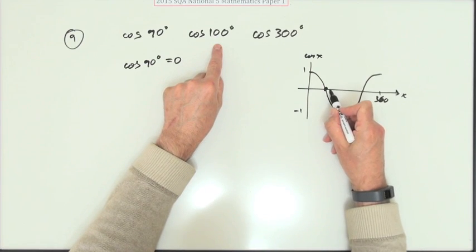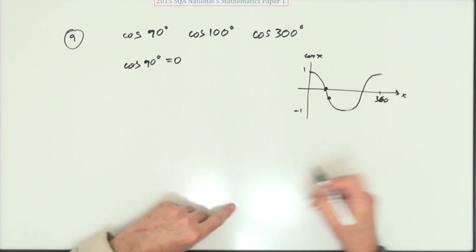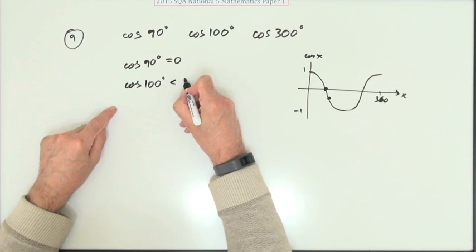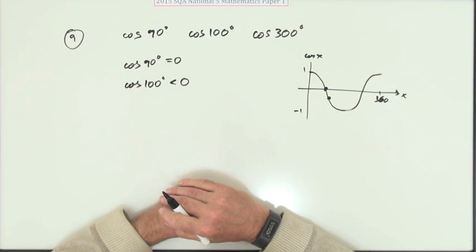Cos 100 is just a wee bit beyond it. So here's cos 100. So I know that whatever it is, cos 100 is less than 0. That means it's smaller.